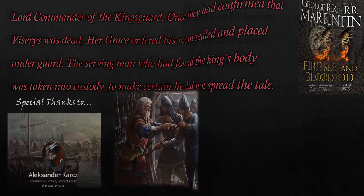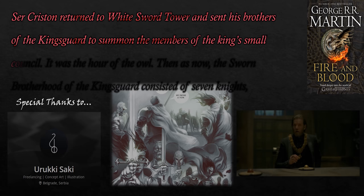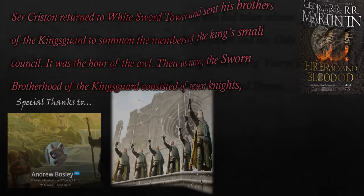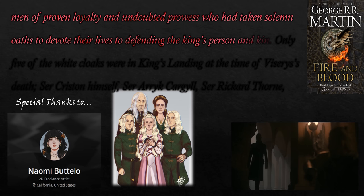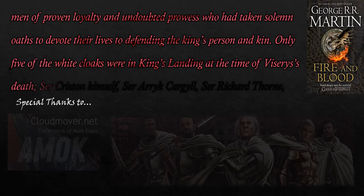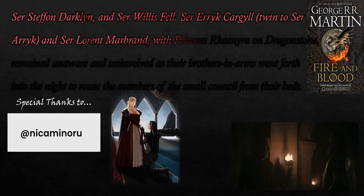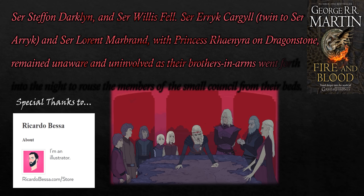Ser Criston returned to Whitesword Tower and sent his brothers of the Kingsguard to summon the members of the king's small council. It was the hour of the owl. Then, as now, the sworn brotherhood of the Kingsguard consisted of seven knights — men of proven loyalty and undoubted prowess, who had taken solemn oaths to devote their lives to defending the king's person and kin. Only five of the white cloaks were in King's Landing at the time of Viserys' death: Ser Criston Cole himself, Ser Eric Cargile, Ser Rickard Thorne, Ser Stefan Darklyn, and Ser Willis Fell. Ser Arik Cargile and Ser Lawrence Marbrand, with Princess Rhaenyra on Dragonstone, remained unaware and uninvolved as their brothers-in-arms went forth into the night to rouse the members of the small council from their beds.